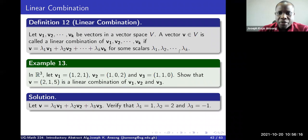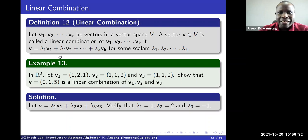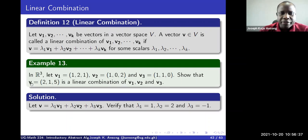all the way to lambda k times vk, for some scalars. So if I can find scalars such that the product of the scalars with these vectors, and the sum of all of that — if this can be written as that — then v is said to be a linear combination of these vectors. That is basically what that means.